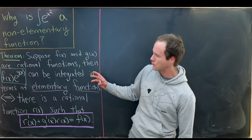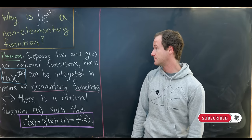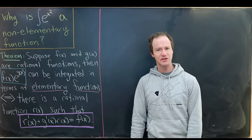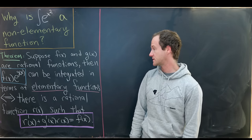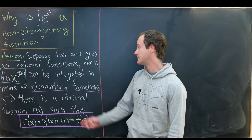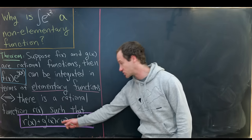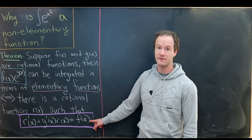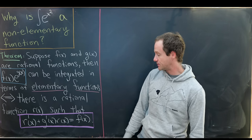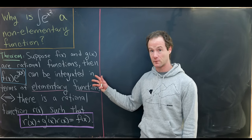Now let's look at the theorem which will help us prove that the antiderivative of e to the x squared is non-elementary. Suppose that f(x) and g(x) are rational functions — that is, ratios of polynomials. Then the function f(x) times e to the g(x) can be integrated in terms of elementary functions if and only if there is a rational function r(x) satisfying the first order linear differential equation: r prime plus g prime times r(x) equals f(x). This is a fairly powerful result.